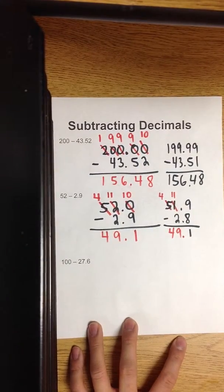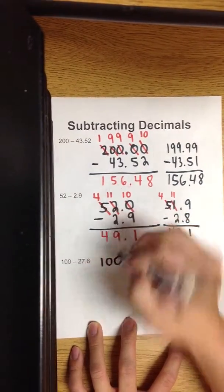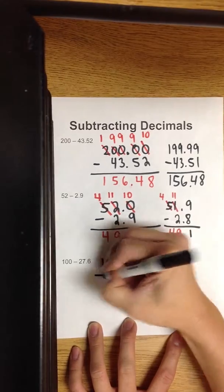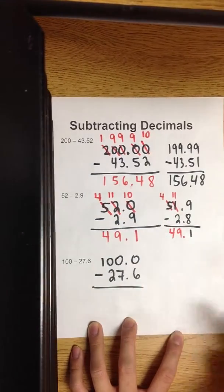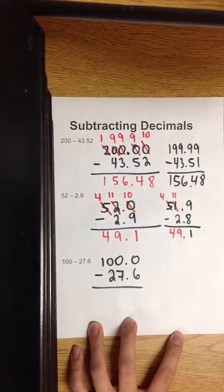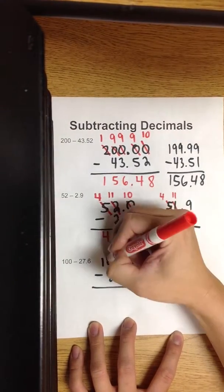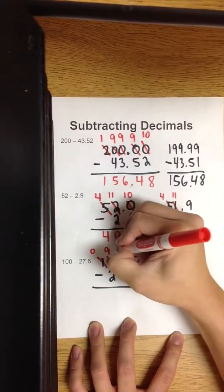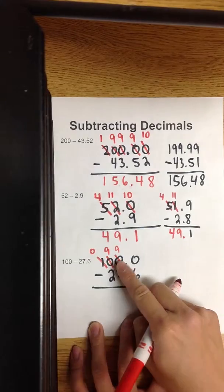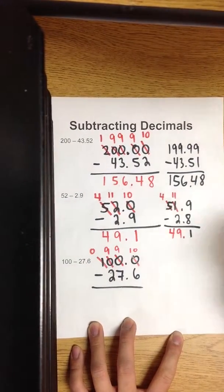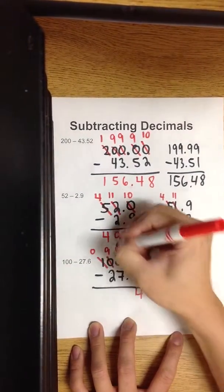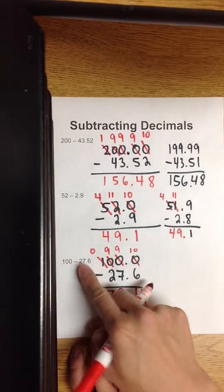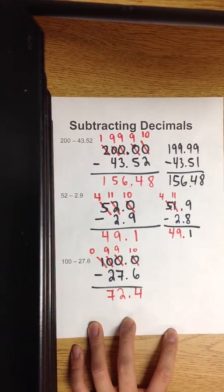The last example is one hundred as a whole number. It's in the tenths place, so we need one placeholder. Minus twenty-seven and six tenths. Can you take away six from this? Nope — got to regroup, regroup, regroup. This becomes a zero, this ten becomes a nine, this ten becomes a nine, and you're taking ten ones and putting it here. Ten minus six is four. Nine minus seven is two. Nine minus two is seven. So the difference between one hundred and twenty-seven and six tenths is seventy-two and four tenths.